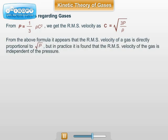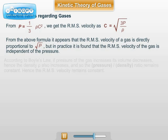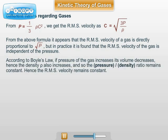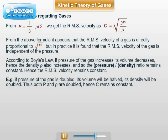Thus, it appears that RMS velocity is directly proportional to the pressure of the gas. But it can be seen that as pressure of the gas increases, according to Boyle's law, its volume decreases. Thus, the ratio P/ρ remains constant. For example, if pressure of the gas is doubled, its volume becomes one half and the density becomes double. Hence, both pressure and density become double and the RMS velocity remains constant. Hence, another formula for RMS velocity is used.